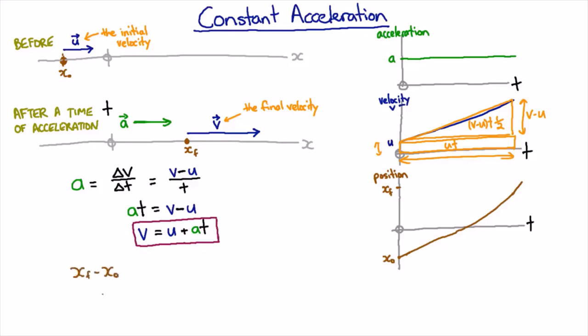So the distance we travel is the final position minus the initial position. We've just agreed that it's going to be ut, the area of the rectangle, plus (v minus u)t over 2, which is the area of the triangle.